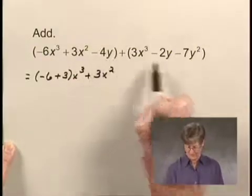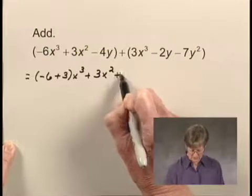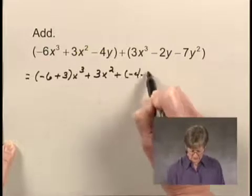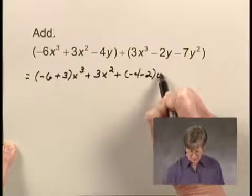This is a y term, and there's another y term over here. So I can write this as negative 4 minus 2y.